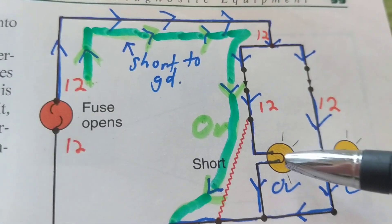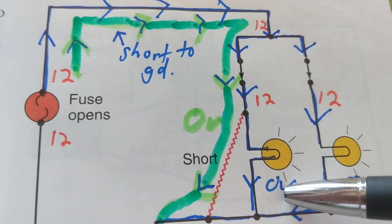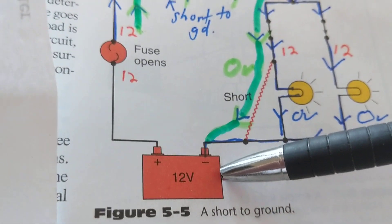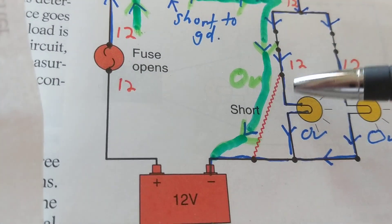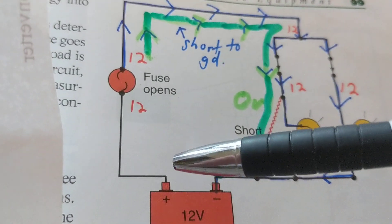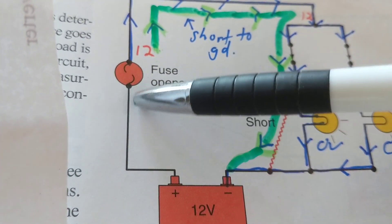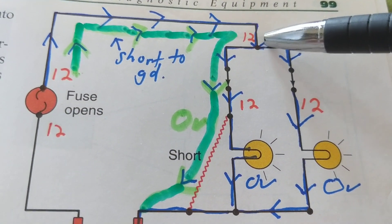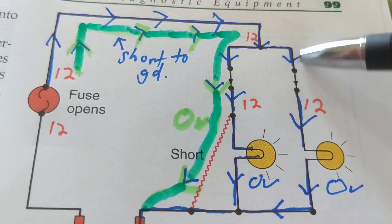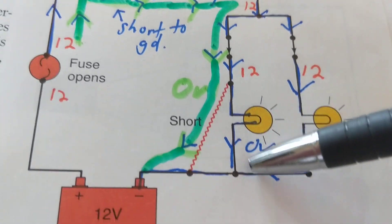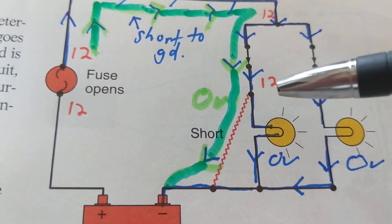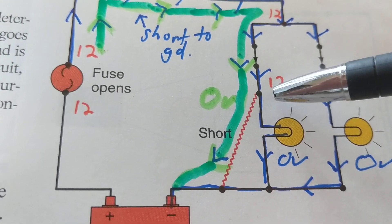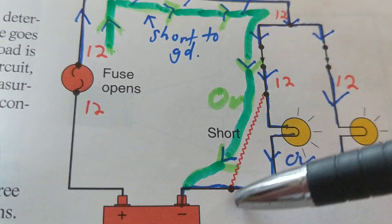This next example is a bit more complicated — two bulbs in parallel. We now have a fuse in the circuit. The battery feeds through the fuse, and in the normal case current splits at the junction, one path to each bulb, then back to ground. In the second picture, a short to ground is placed — a direct short from one point in the circuit straight to ground.